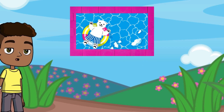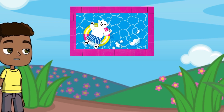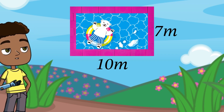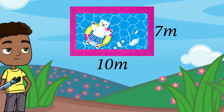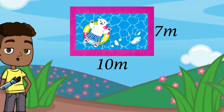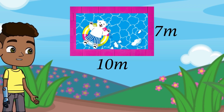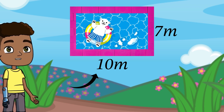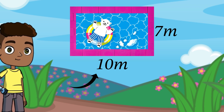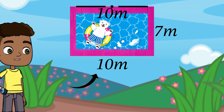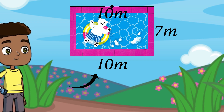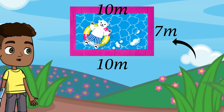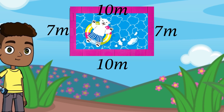Let's take a look at this rectangular swimming pool. The length is 10 meters and the width is 7 meters. We know that opposite sides of a rectangle are equal and parallel. Therefore, if this side is 10 meters, the opposite side is also 10 meters. And if this side is 7 meters, the opposite side is also 7 meters.